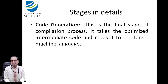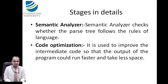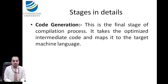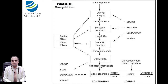Code generation is the final stage of the compilation process. It takes the optimized intermediate code and maps it to the target machine language. Code optimization is directly connected to code generation. This is the complete set of phases of a compiler, or we can say the complete phases of a translator.